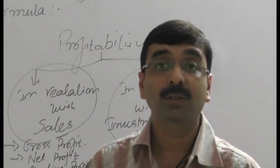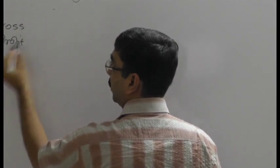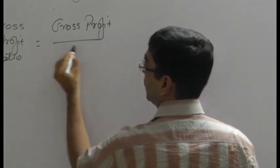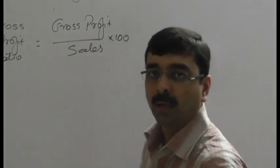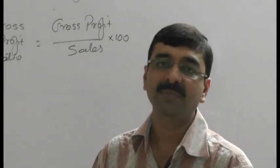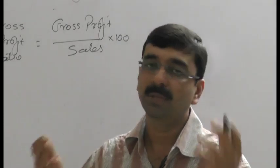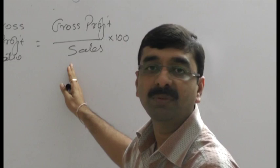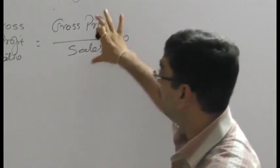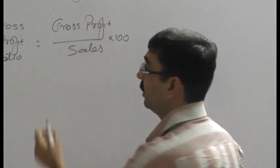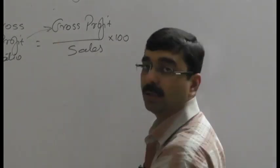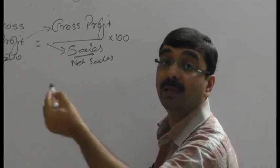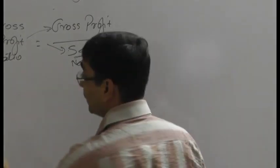Starting with the gross profit ratio formula: gross profit divided by sales, multiplied by 100. As mentioned earlier, ratio analysis can be expressed in percentage, proportion, or number of times. Here it is expressed as a percentage, hence multiplied by 100. The company wants to determine how much gross profit is earned on the basis of net sales — that is, on the basis of net sales, what amount of profitability has been earned by the company.